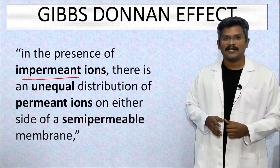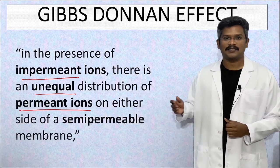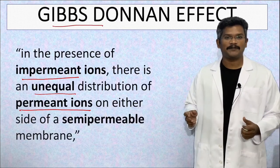In the presence of impermeant ions, there is an unequal distribution of the permeant ions across the semi-permeable membrane. This is called the Gibbs-Donnan effect.